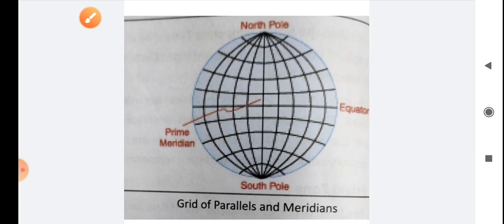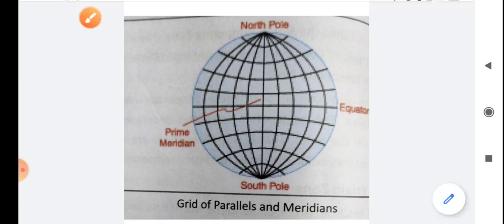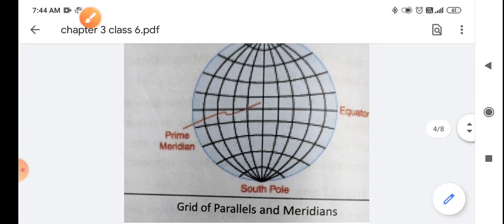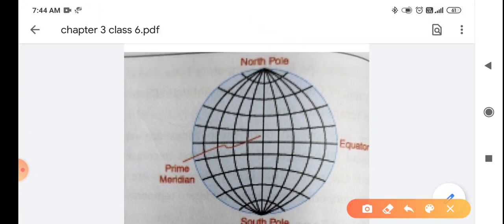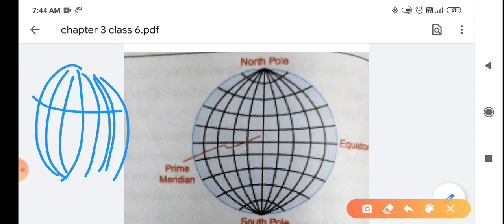Now what is this? This is a grid. Grid means a net. Longitudes and latitudes.